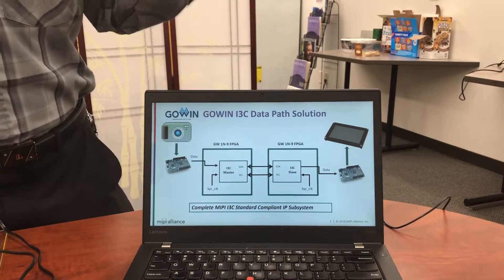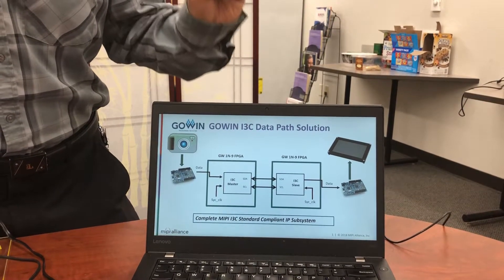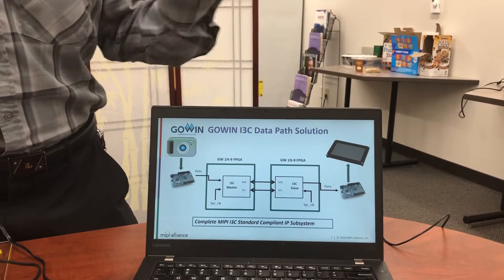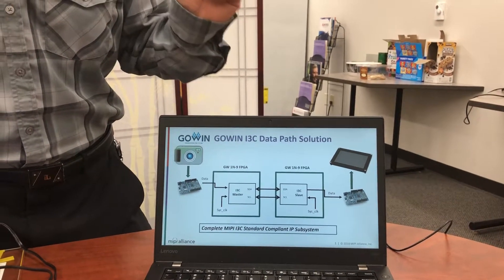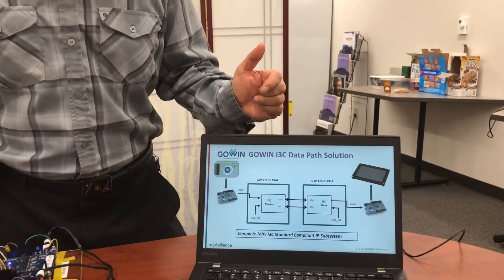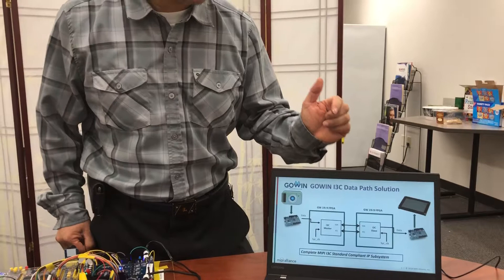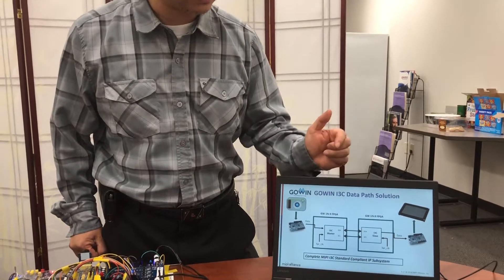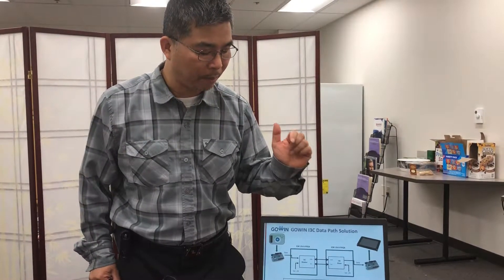I3C is actually a new generation's communication protocol. It's on top of the previous I2C. I2C has two wires but it has a separate interrupt wire, and once you go to I3C, this interrupt wire has been eliminated. You only get two wires. The speed increased to 33 megabits per second, maximum is 25 megahertz.